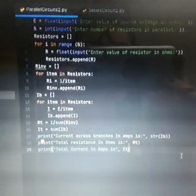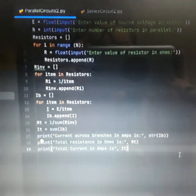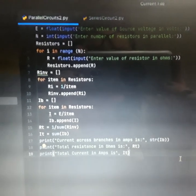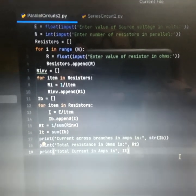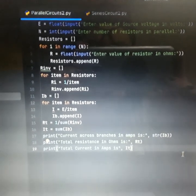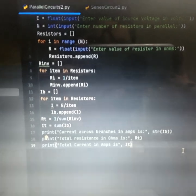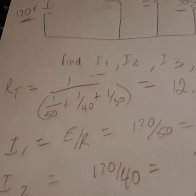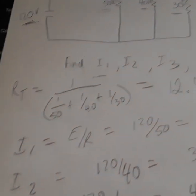So what the code is doing: you are inputting the value of the source voltage and then you are inputting the value of resistors in parallel. It stores the value of resistors in parallel in a list, and then it takes that list because you have to use a complicated formula.